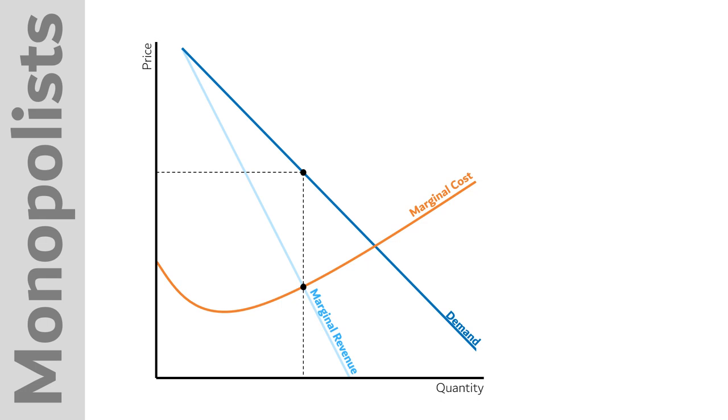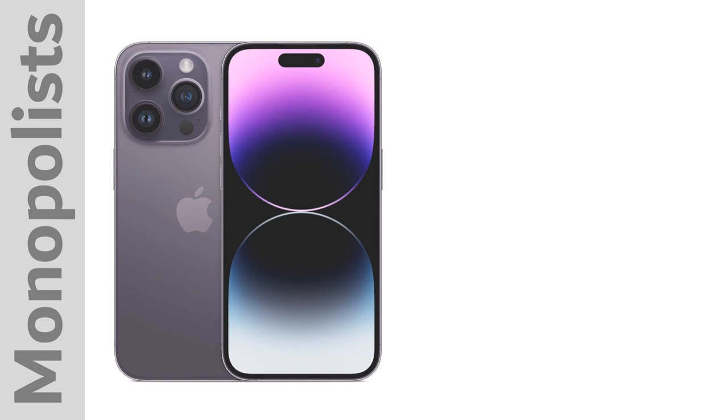The problem with this outcome, aside from it just feeling like a nasty thing to do, is that there's deadweight loss. In this gray triangle, are consumers willing to pay more than what it costs for a monopolist to produce something. But the monopolist is unwilling to sell it to them because it would mean they would have to lower the price for everyone else.